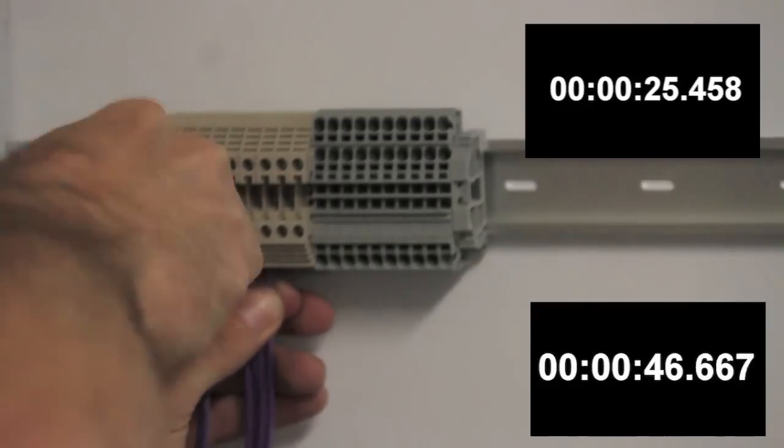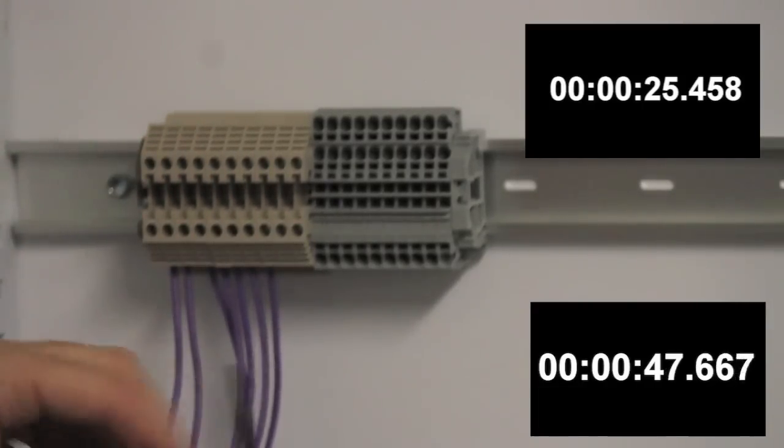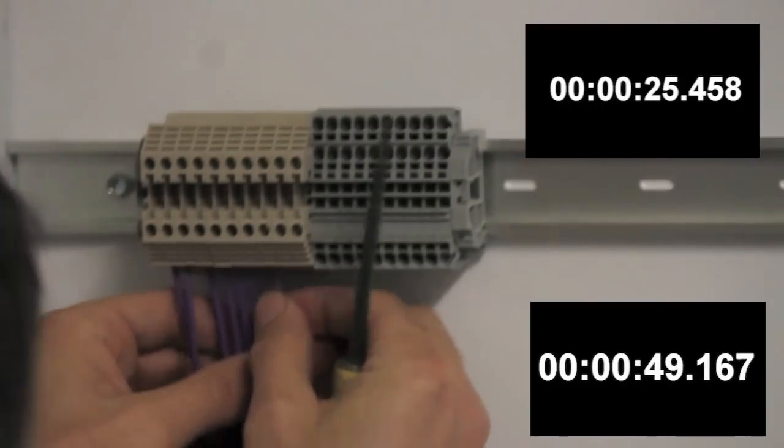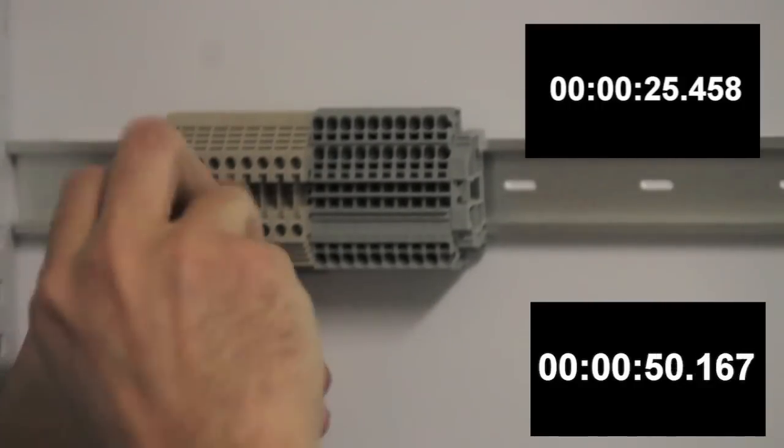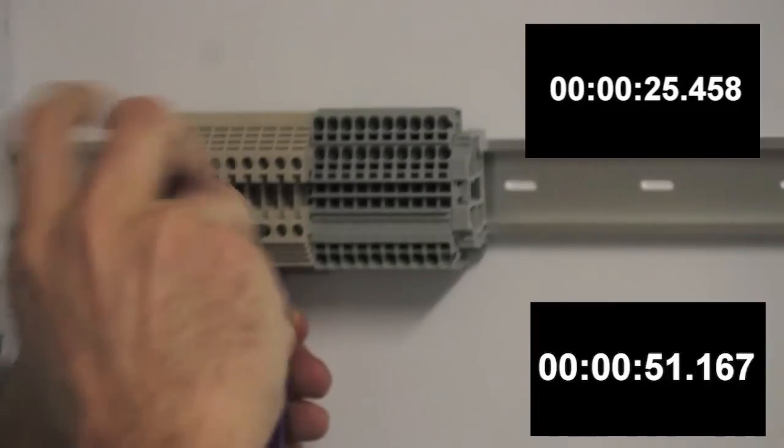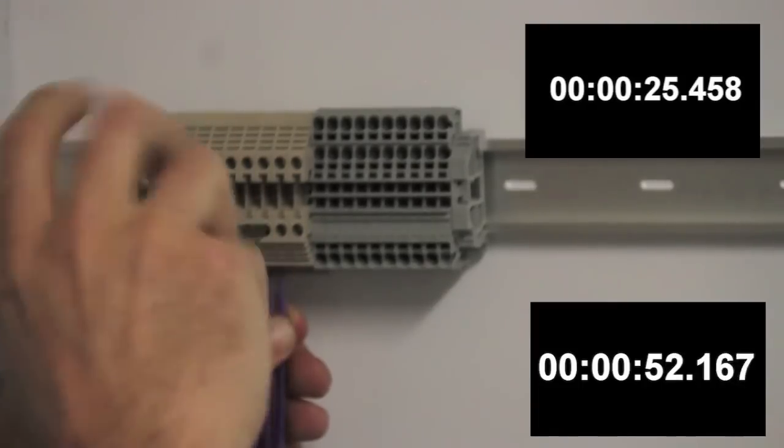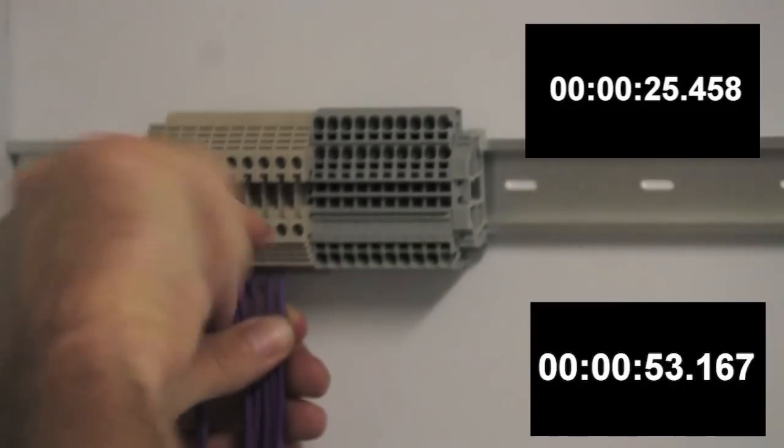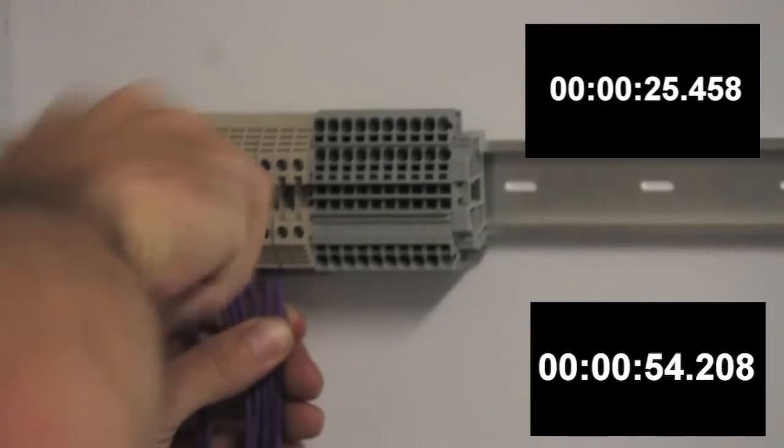We can talk a little bit about the jumper systems. The standard screw block uses a screw type jumper so that would require 10 more screws to be tightened if this was a commoning block. The TopJob S uses a standard push-in jumper and you can stagger every other pin.